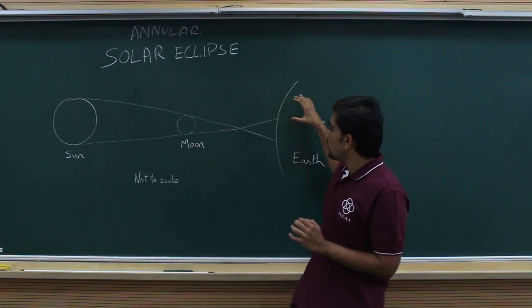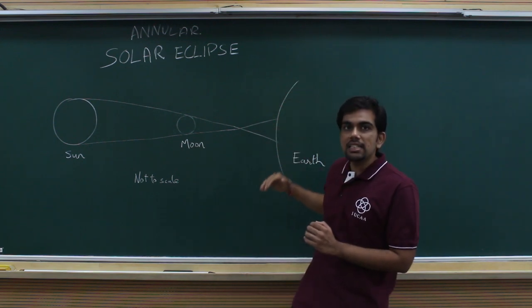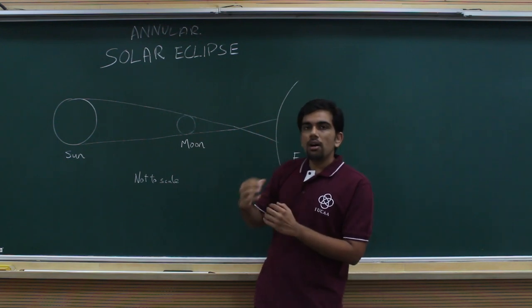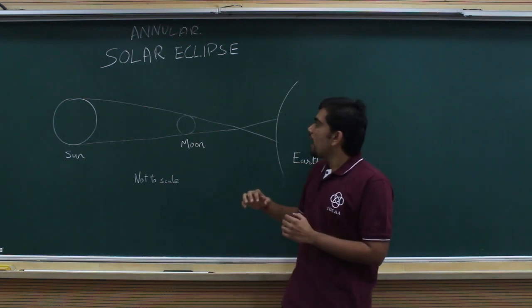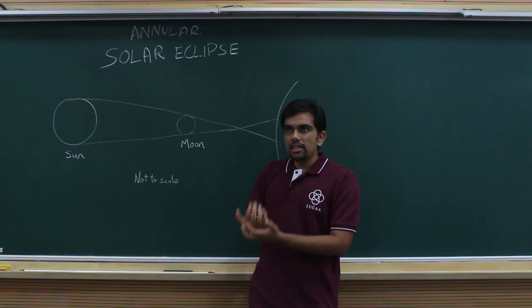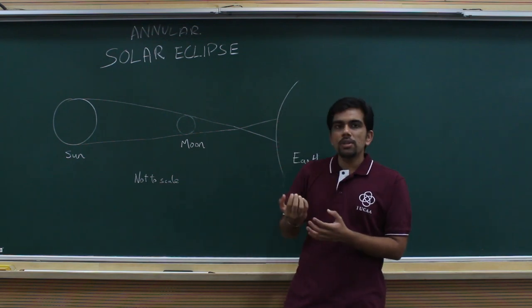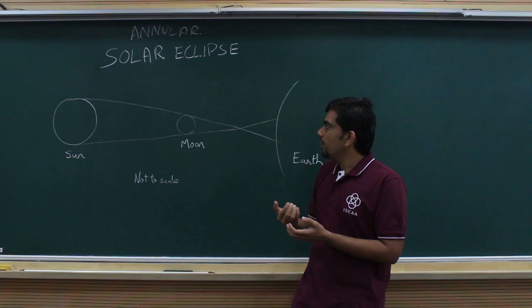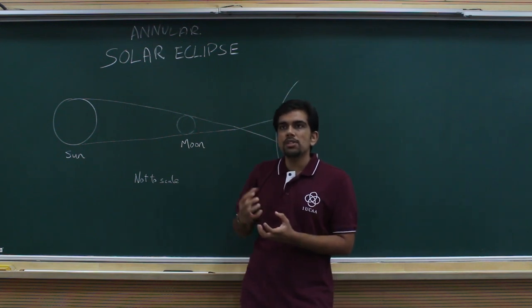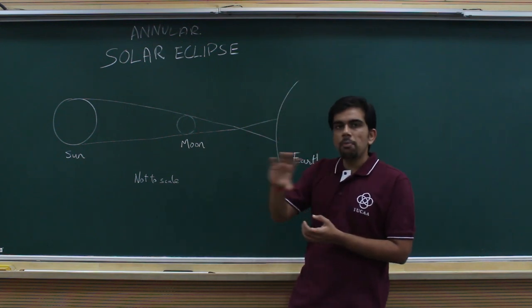Outside this region, there is another region where we can see a partial eclipse where part of the Sun will be blocked. For example, in this year's eclipse, we'll see totality in southern parts of India while we see a partial eclipse till the middle part of India.